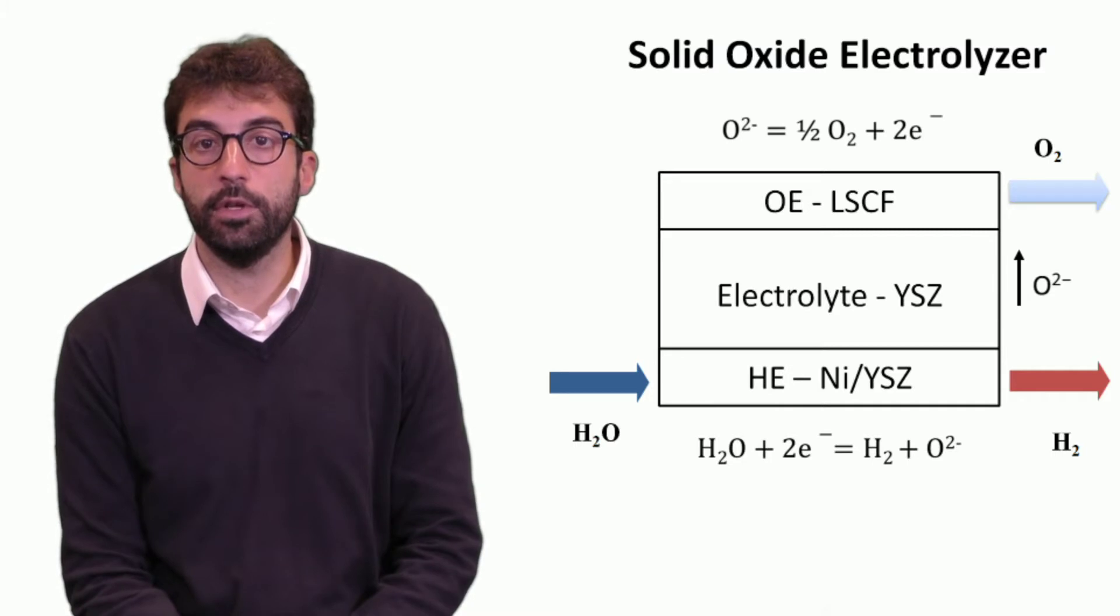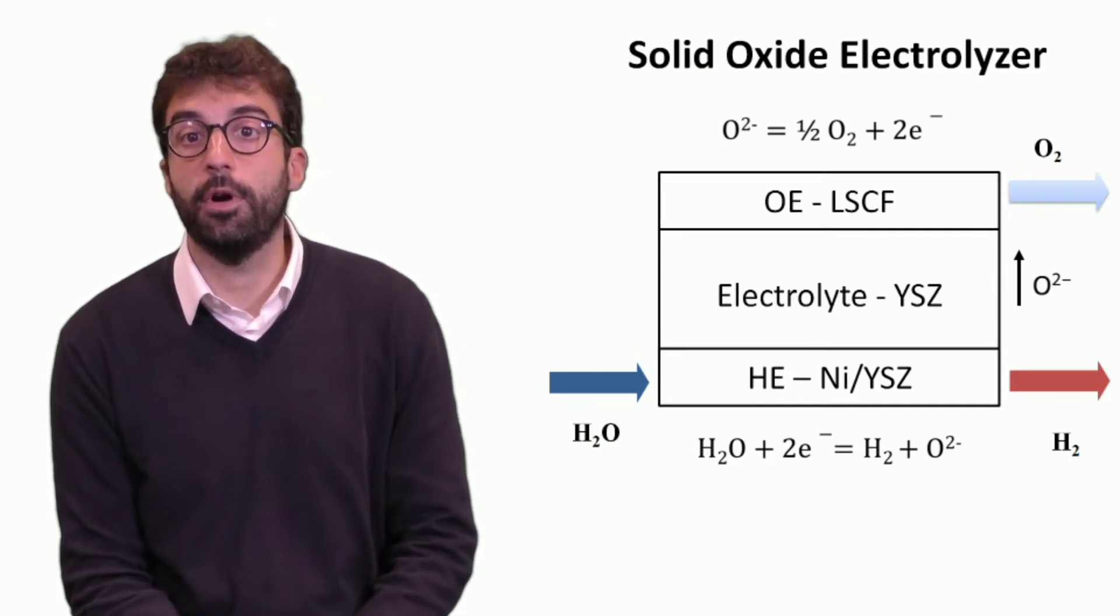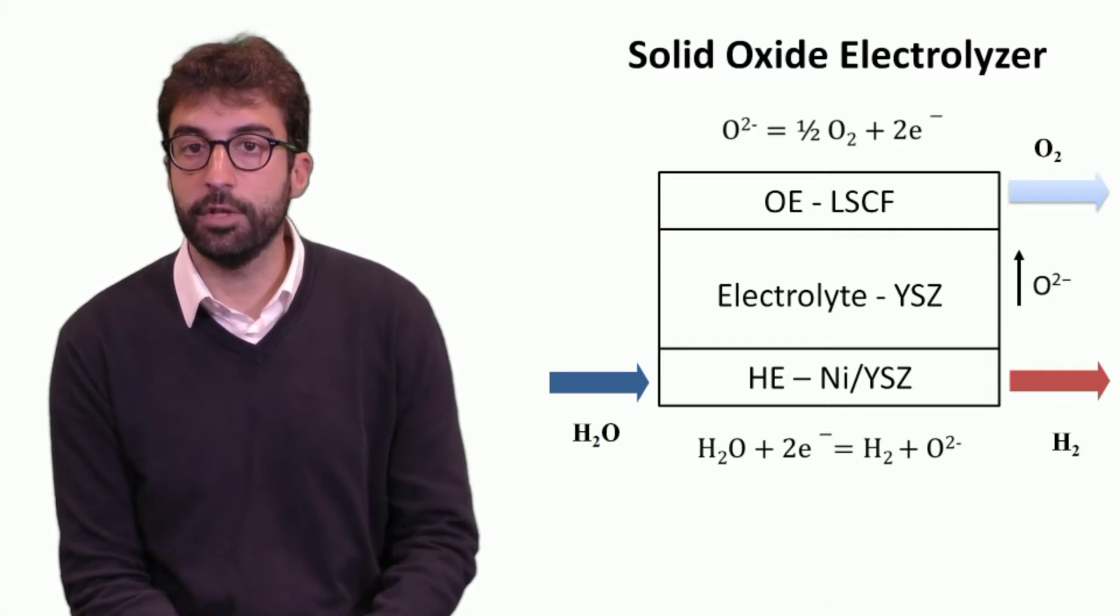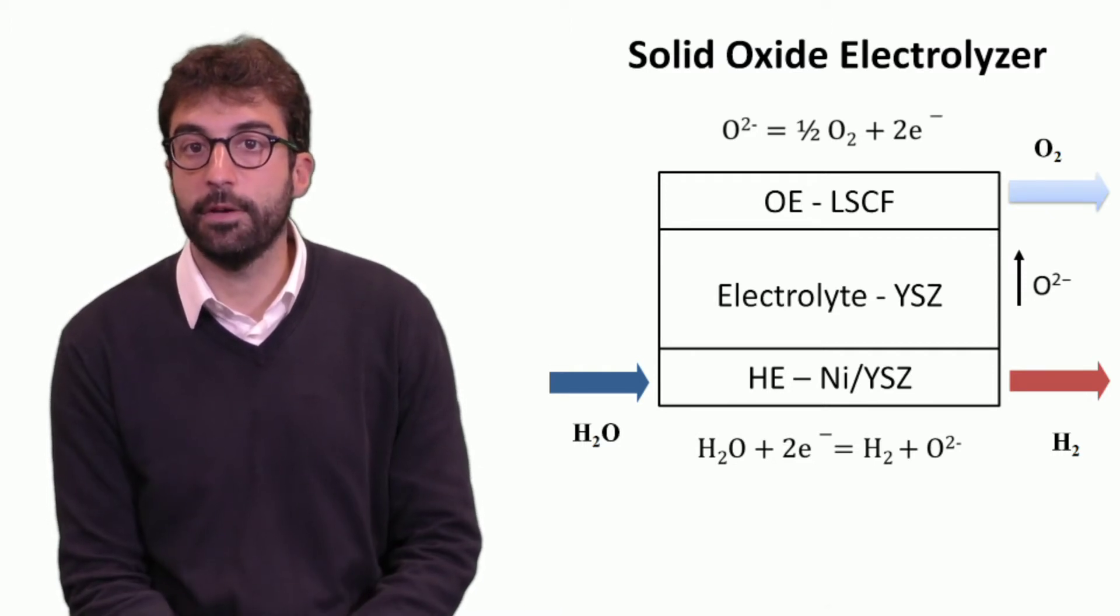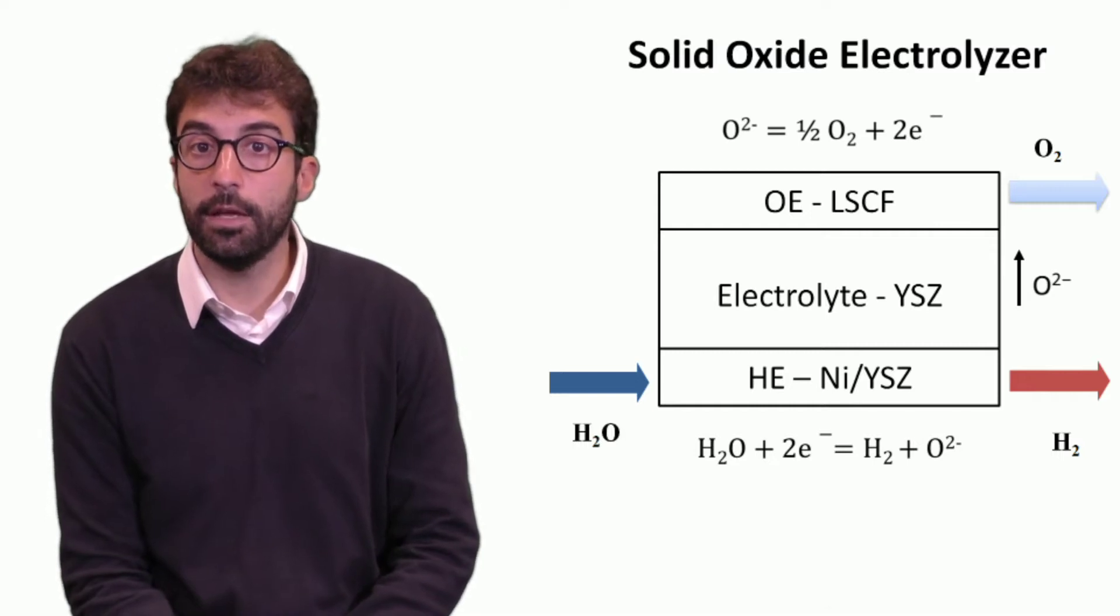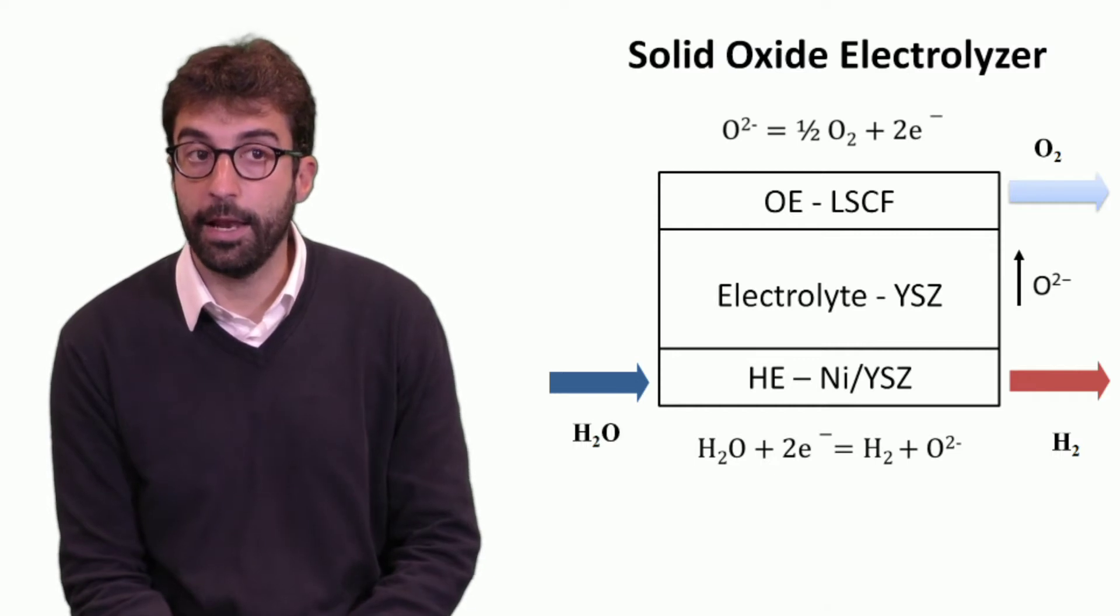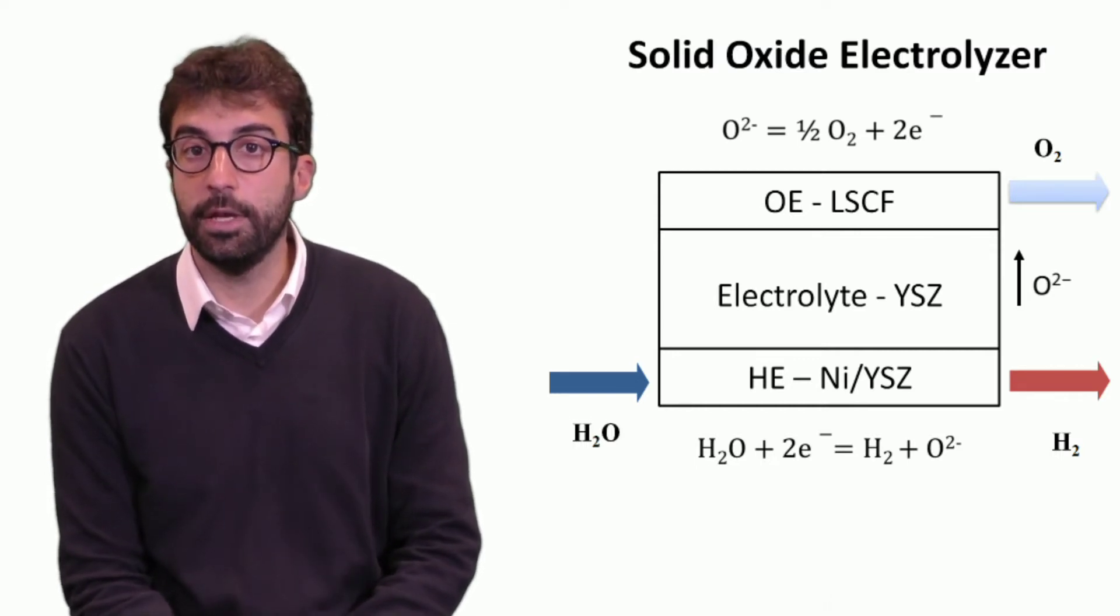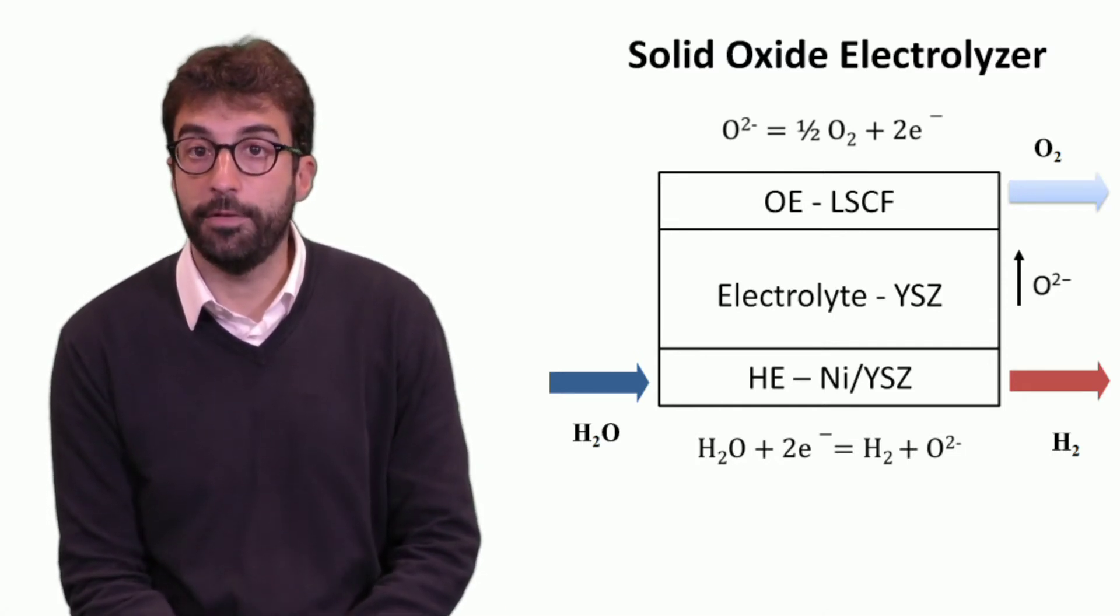Looking into the materials, what we usually have in the market nowadays are the materials that are most diffused also for solid oxide fuel cells. We have an electrolyte that is yttria-stabilized zirconium, a ceramic material that allows oxide flow. At the hydrogen electrode, nickel is usually used as a catalyst, with yttria-stabilized zirconium as a base. Finally, at the oxygen electrode, the diffused material is a perovskite, lithium strontium cobalt ferrite (LSCF).